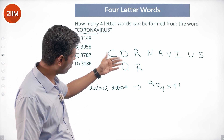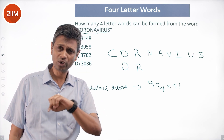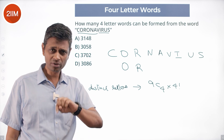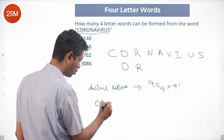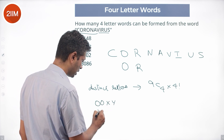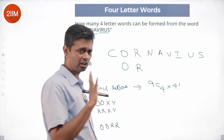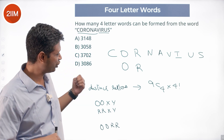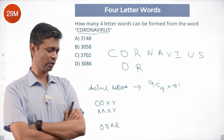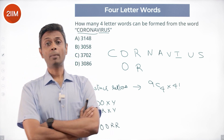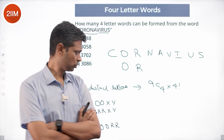We could also have letters repeating. The only letters that can repeat are O and R. So the possible cases are: only O repeating, only R repeating, or both O and R appearing twice. That gives us scenarios like O, O, X, Y or R, R, X, Y or O, O, R, R.